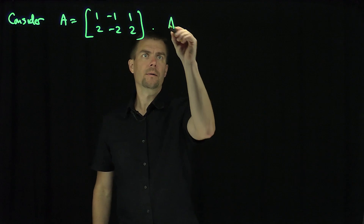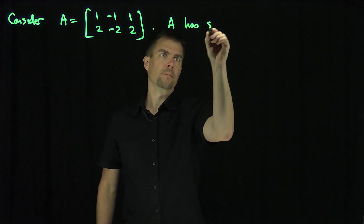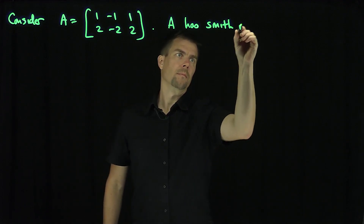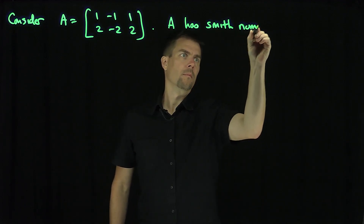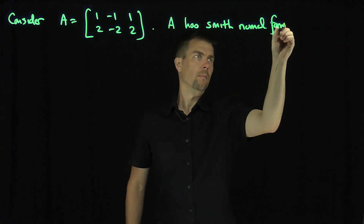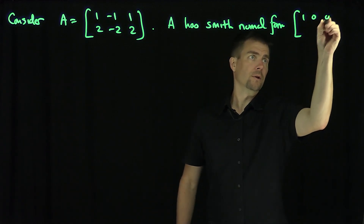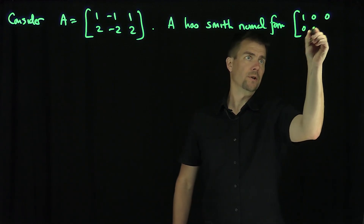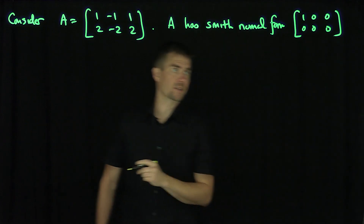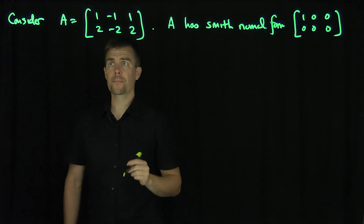Then A has Smith normal form [[1, 0, 0], [0, 0, 0]]. That's going to be the Smith normal form, so let's prove this.